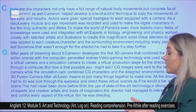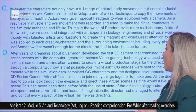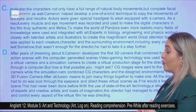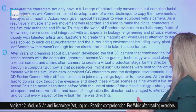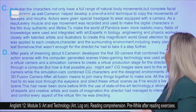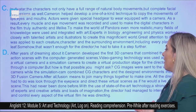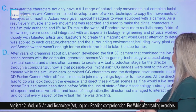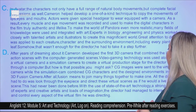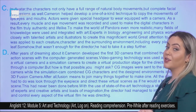But how is that possible, you might ask? CG images were sent to the virtual camera, while the simulation cam combined CG characters and the designed environments into the 3D fusion camera. After all, fusion means to join many things together to make one. All the director had to do was look through the eyepiece and direct these virtual scenes as if he would a live action scene. This had never been done before. With the use of state-of-the-art technology, a strong team of experts and creative artists, and lots of imagination, the director had managed to interact with and control every aspect of the virtual film he was directing.